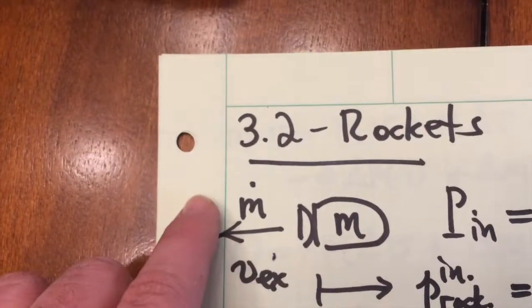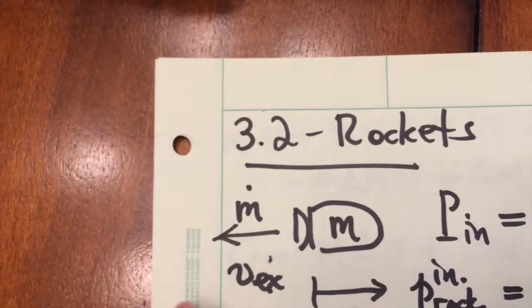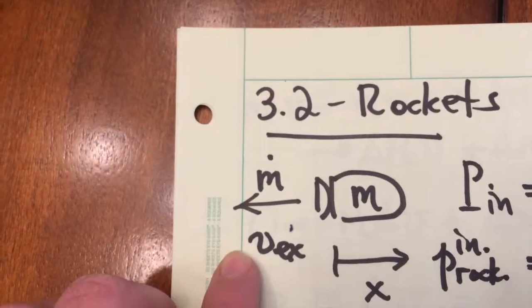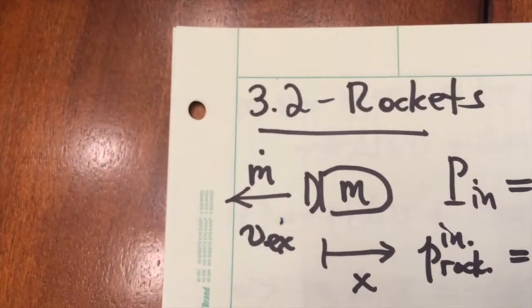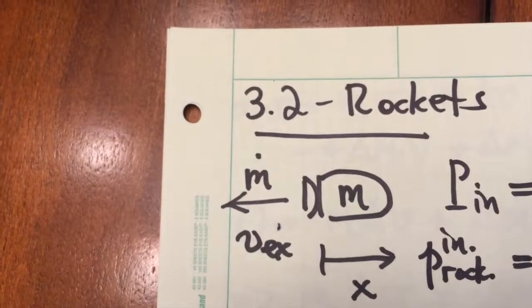It ejects material out the back at a rate m dot with a velocity vx, the velocity of the exhaust. This is a one-dimensional problem, so we only need to think about motion along the x direction.